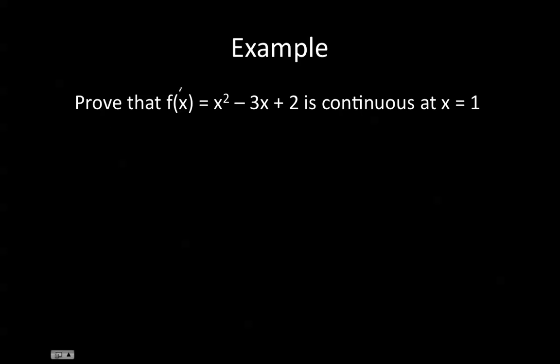So here we have f of x equals x squared minus 3x plus 2. Therefore, the derivative of our function f is equal to 2x minus 3.